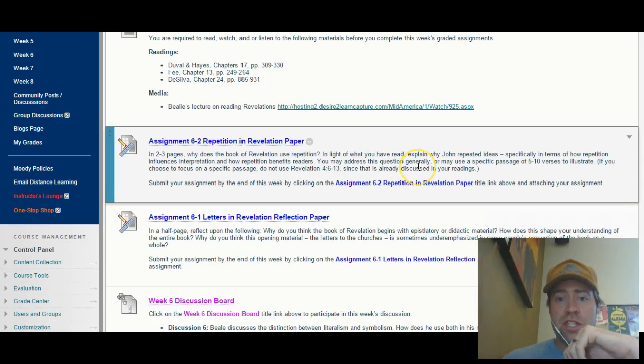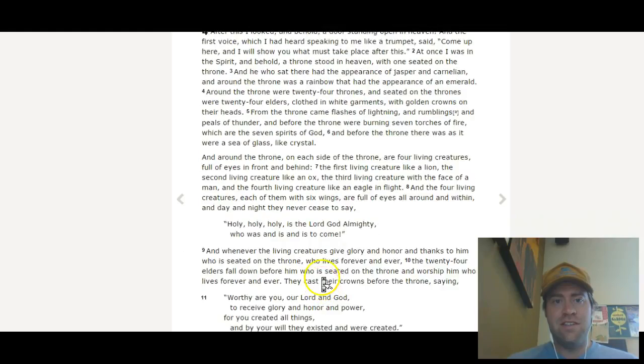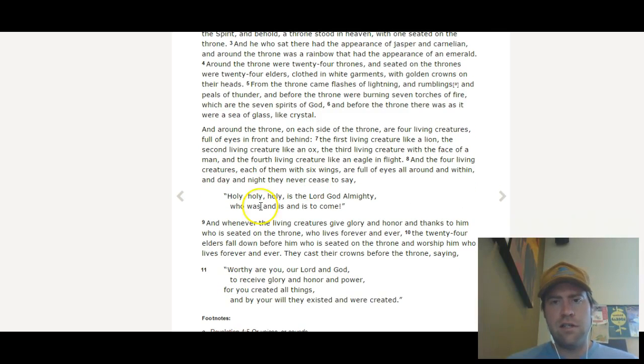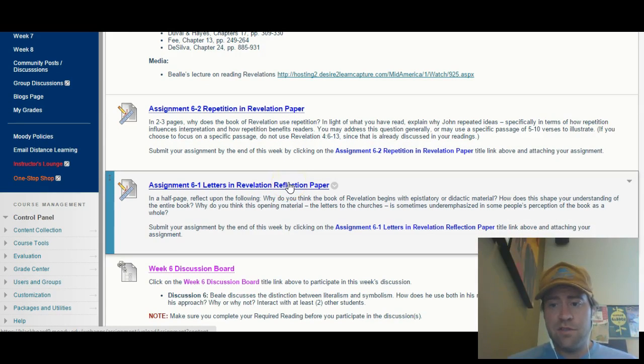You may address this question generally, meaning in terms of why the book uses repetition. So you can answer that question from a general sense, or you can actually give examples and use a specific passage of maybe 5-10 verses to illustrate it. And then we do want you to make sure not to use Revelation 4, 6-11. Another faux pas, Revelation 4 does not have 13 verses. It has 11 verses. So you can see here, there's some of the repetition in here about the living creatures, holy, holy, holy. You're not to use that one as your example. But in your paper, please don't use that one because that's already in your reading. We want you to use a fresh example if you're going to use a specific example.